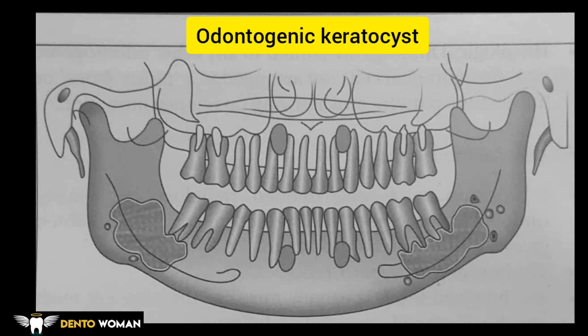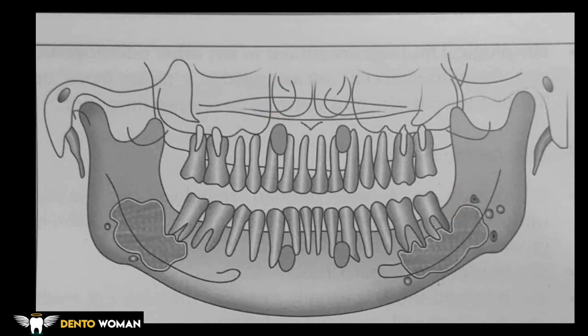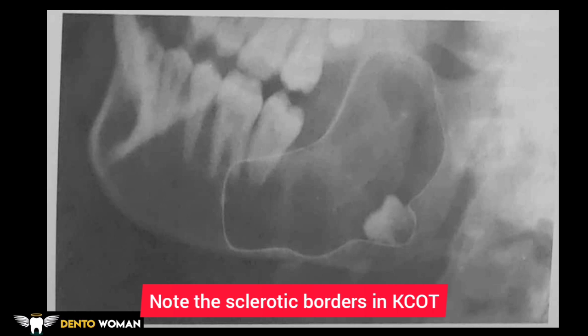This is a diagrammatical representation of the most likely sites of KCOT of the jaws. It is more common in the mandible near the angle, extending into the ramus and forward into the body. The canine region of the maxilla and mandible and the mandibular molar region are preferred sites. In the maxilla it causes buccal expansion. Here you can see a KCOT as a unilocular radiolucency extending from the lower right first molar into the ramus with sclerotic borders and showing displacement of the third molar.